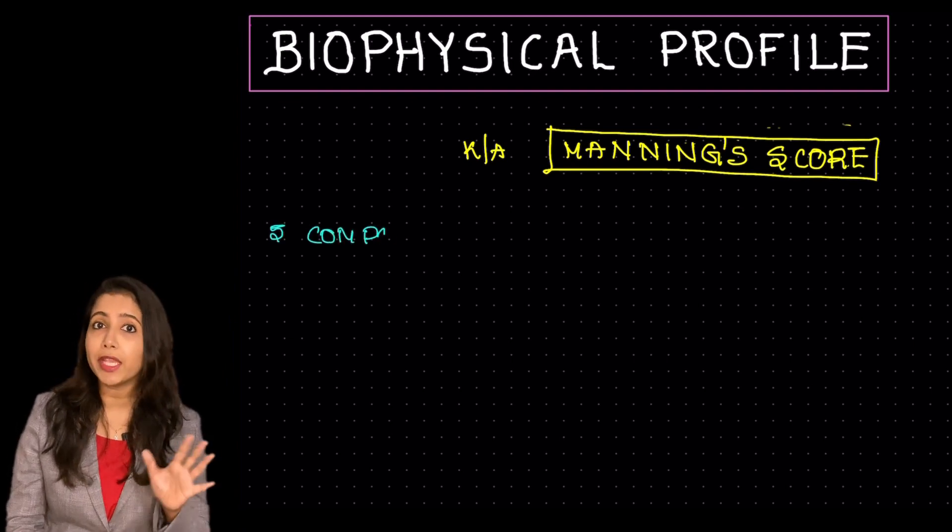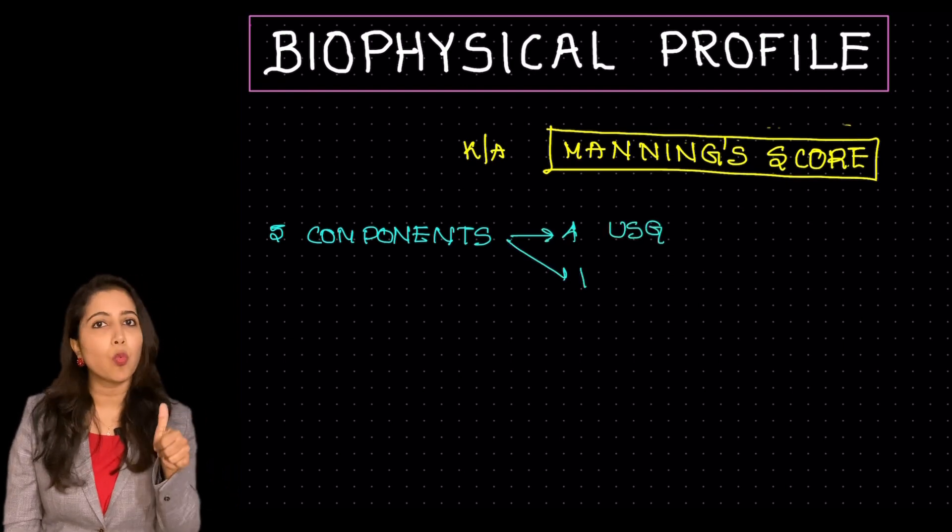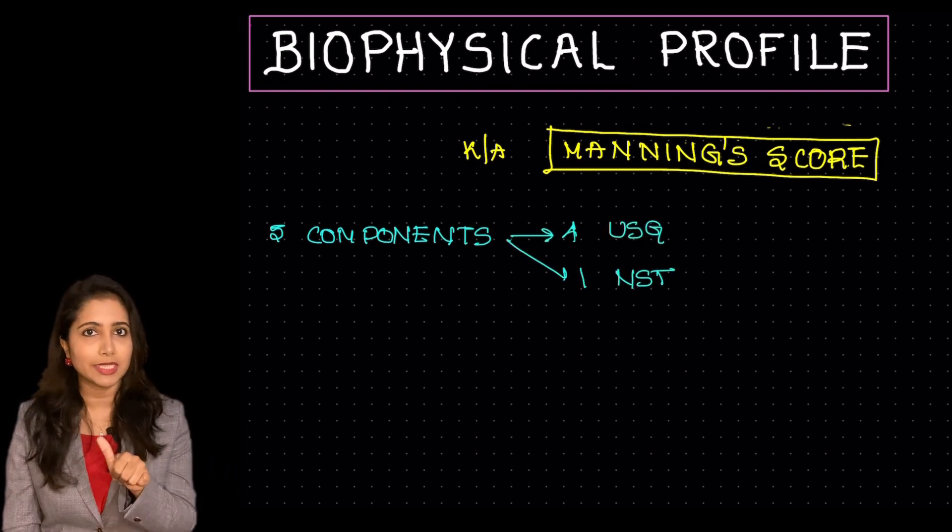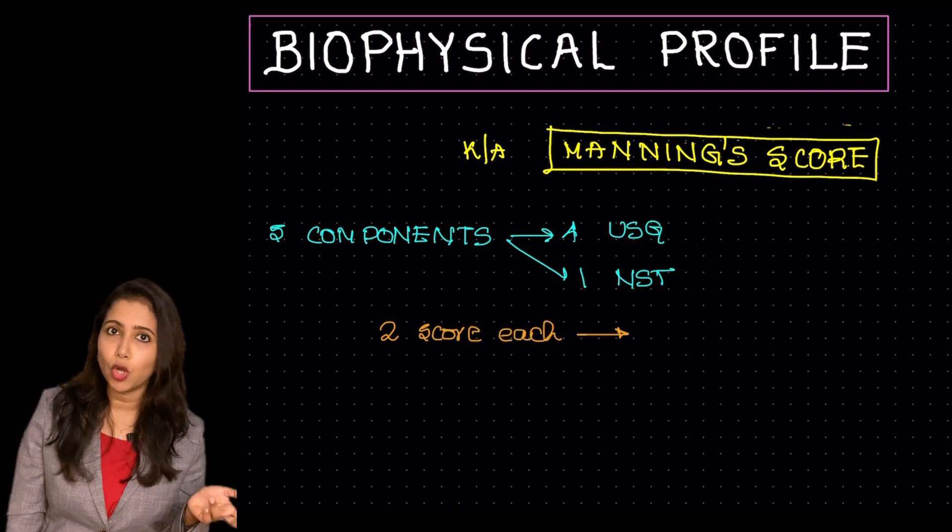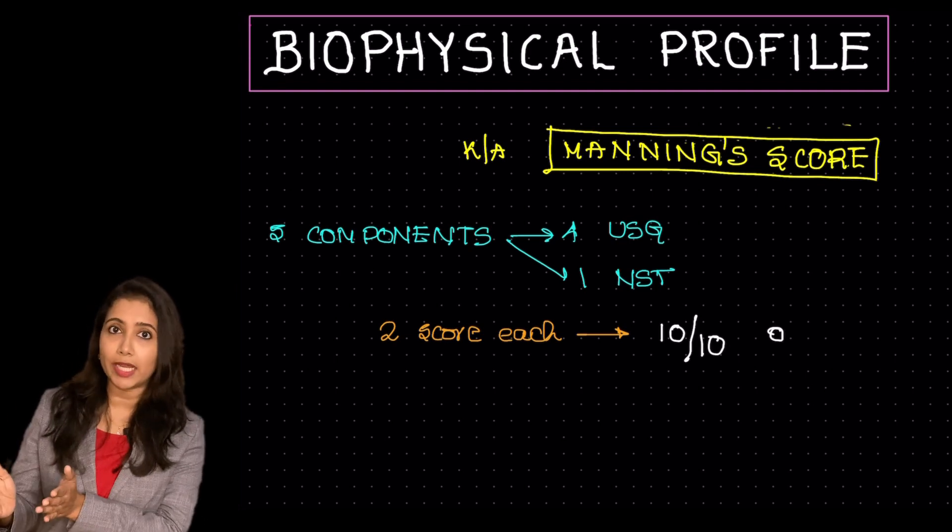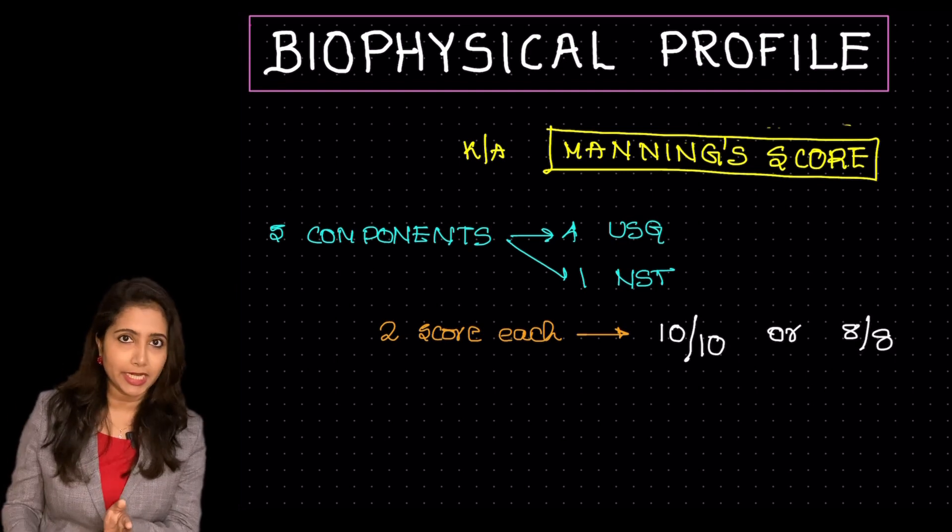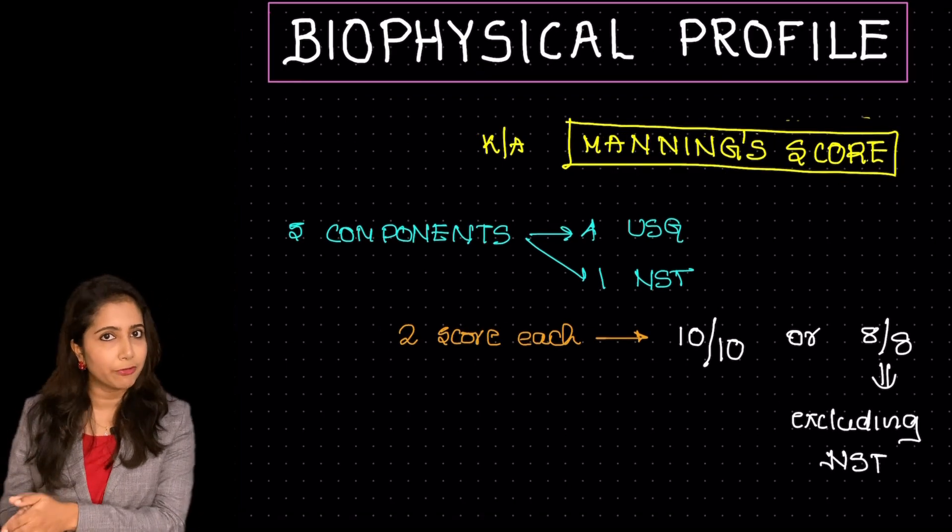This has five components, that is four of them are related to ultrasound and one is related to non-stress test. Each of these components has a score of 2, 2 into 5 is 10. So if the BPP is alright, it will be either 10 by 10 or 8 by 8 in case if we are excluding the NST.